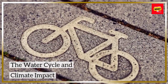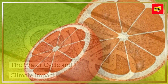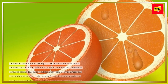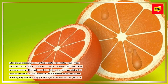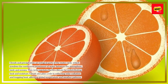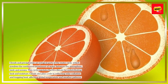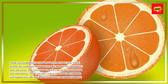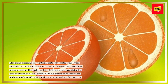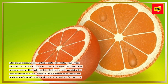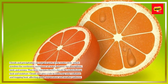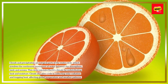The Water Cycle and Climate Impact. Clouds and precipitation are integral parts of the water cycle, which involves the continuous movement of water between the atmosphere, land, and oceans. This cycle regulates Earth's climate by redistributing heat and moisture. Clouds also play a role in reflecting solar radiation and trapping heat, affecting global temperature and weather patterns.